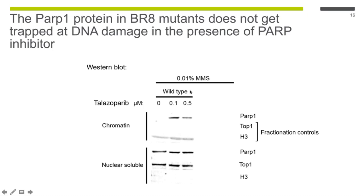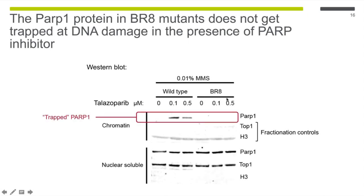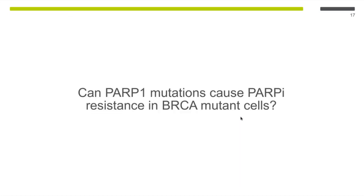This is a nice example of a CRISPR screen: by isolating a point mutant, you can get directly to the mechanism of action of PARP inhibitor drugs. The next question was whether PARP1 mutations could cause PARP inhibitor resistance in BRCA-mutant cells. This was unexpected because we know that deleting PARP1 and BRCA are synthetically lethal — cells should not tolerate simultaneous loss of both proteins. But having seen point mutations from the screen, we wondered if some might be tolerated in BRCA-mutant cells as a resistance mechanism.